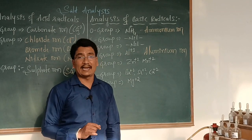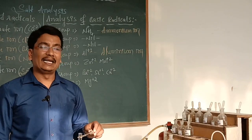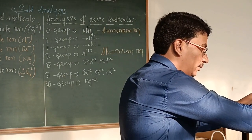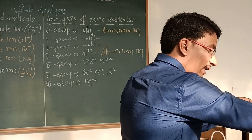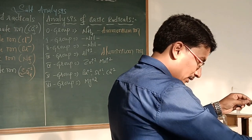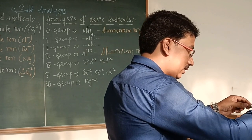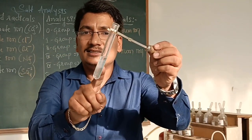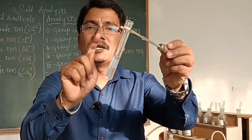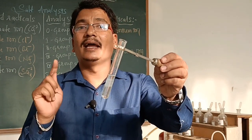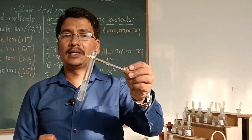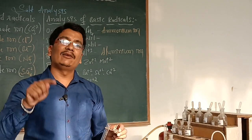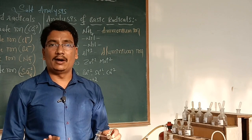For detection of the third group cation, we prepare an original solution. To this original solution, we add solid NH4Cl and excess NH4OH. If a gelatinous white precipitate appears, it indicates the given salt contains a third group cation. Then we have to conduct a confirmation test for aluminum ion Al³⁺.